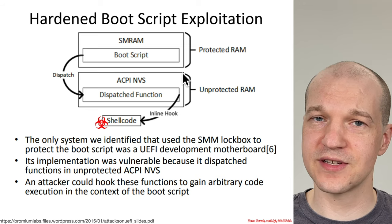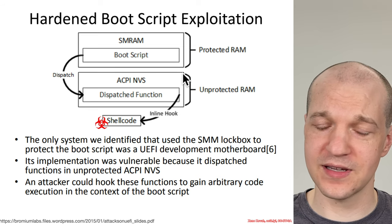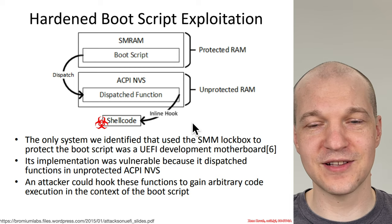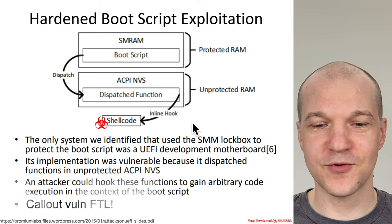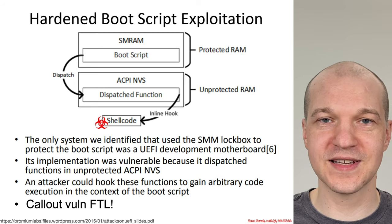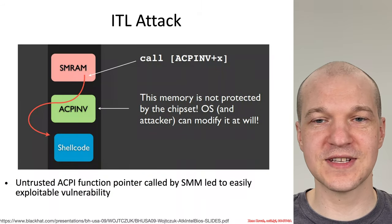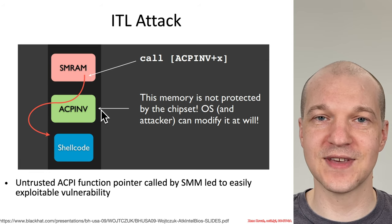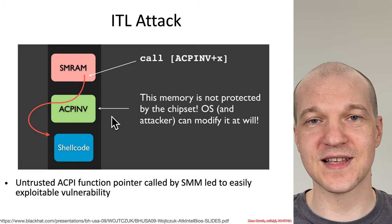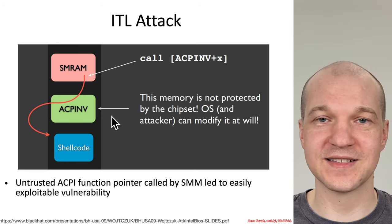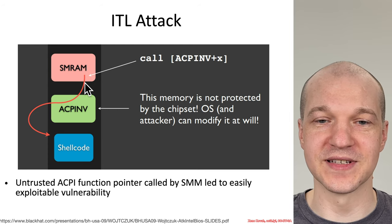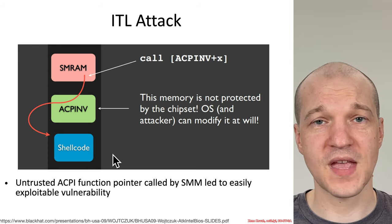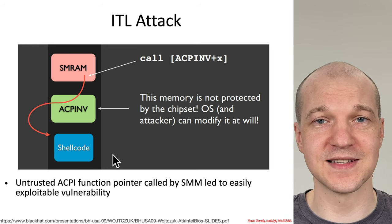I found this particularly ironic in the fact that SMRAM, ACPI NVRAM, and shellcode — in December 2014, going into 2015 — that's exactly the same diagram we had back in 2009 when Invisible Things Labs found their first callout vulnerabilities: SMRAM, ACPI non-volatile storage, to shellcode. The more things change, the more they stay the same.